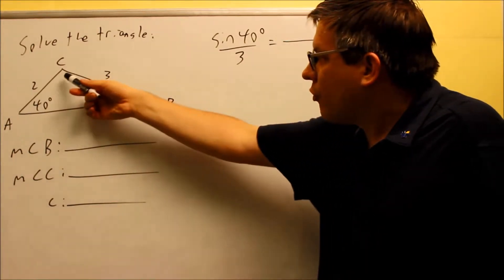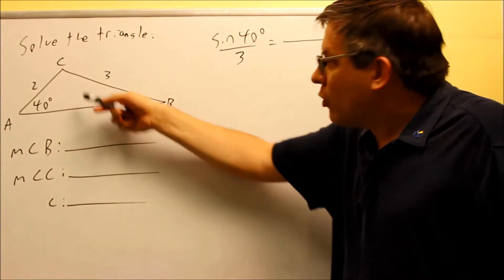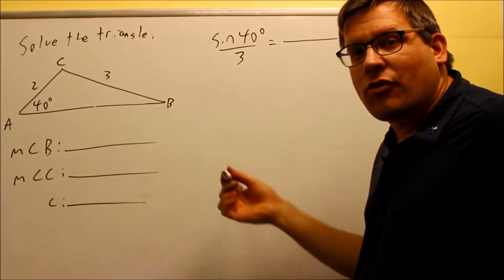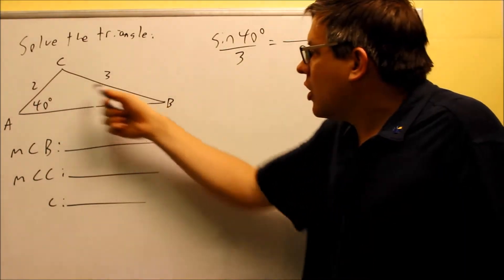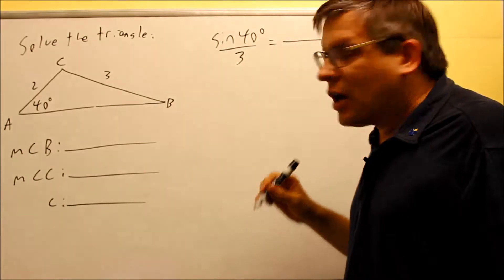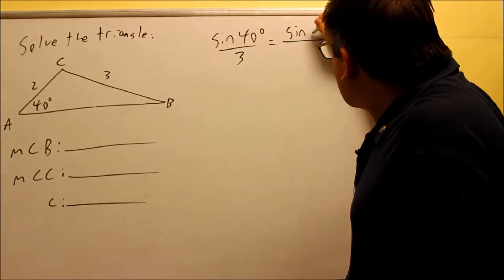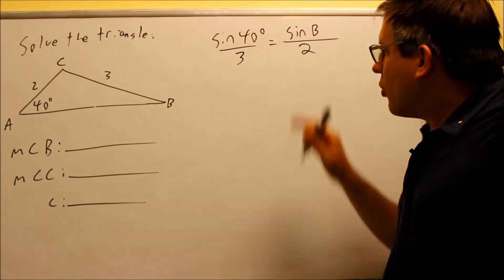We need to take a look at what information is provided. Now I probably don't want to go for angle C because I don't have a side that's opposite of that. If I were to set that up, I'd have sine C over C and there's not enough information to solve the problem. Therefore, you want to solve for angle B first because they have a 2 that's across from that and that will give us enough information. So that's what we're going to do first. We're going to set up that proportion.